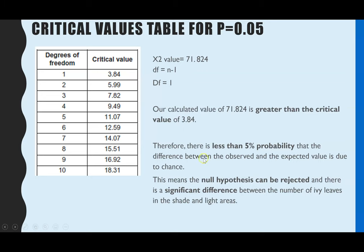What that tells us is because it's exceeded the critical value at p equals 0.05, it means there is less than 5% probability that the difference between the observed and the expected values is due to chance.